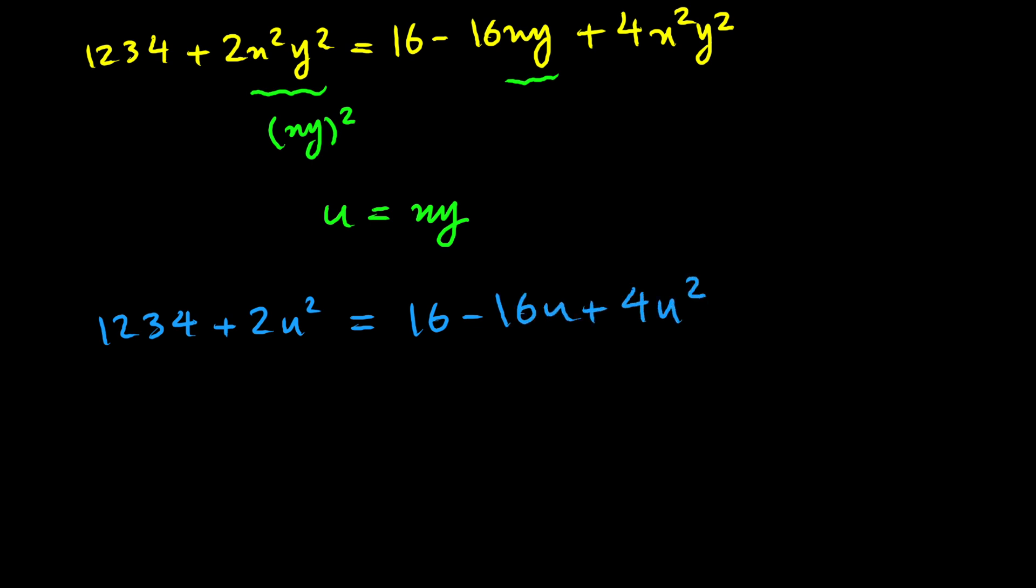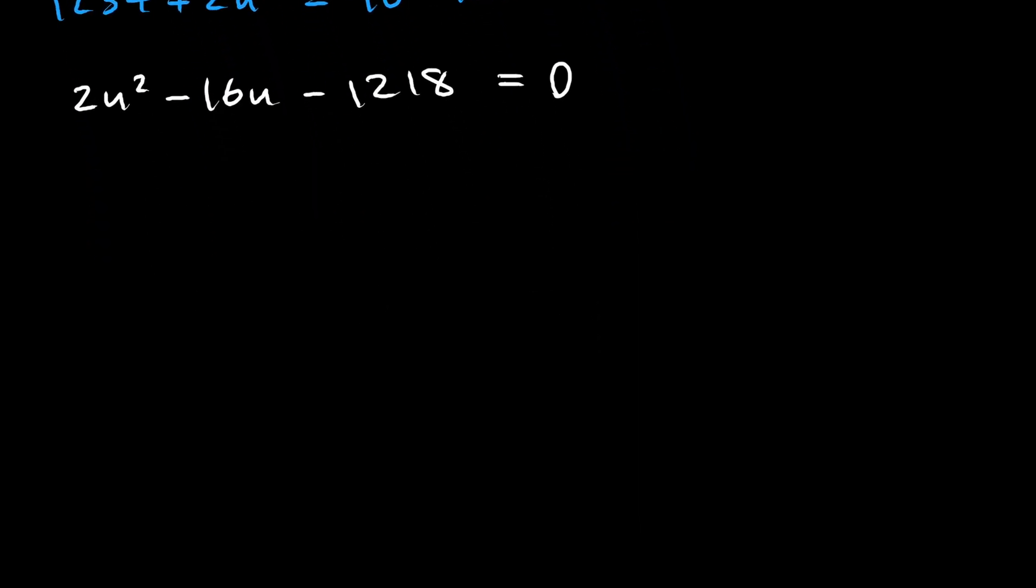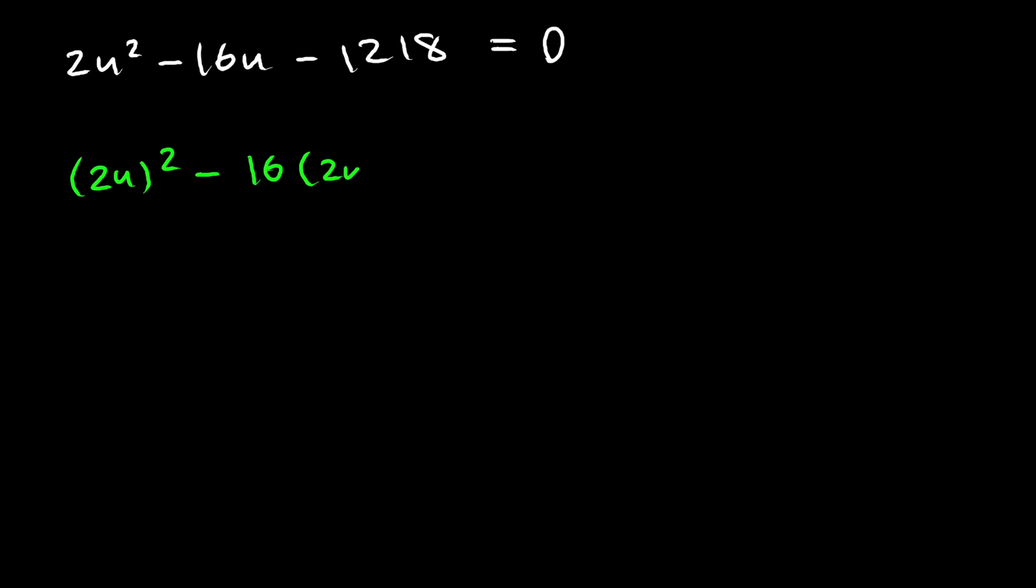Then I need to put everything in the same side. So I will have 2u squared minus 16u minus 1,218 equals 0. So this is a nice quadratic equation. And we can use the quadratic formula for solving for u, but I prefer to factor this. And in order to do that,